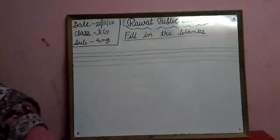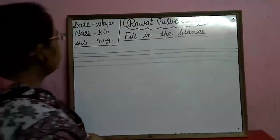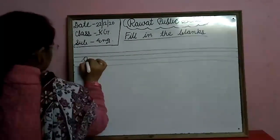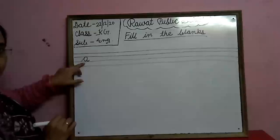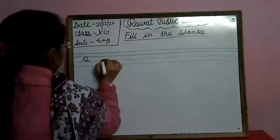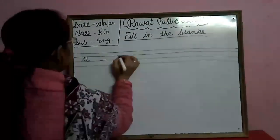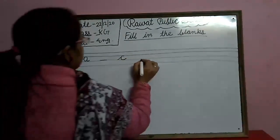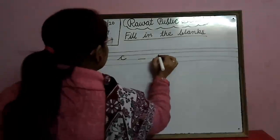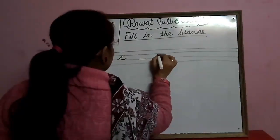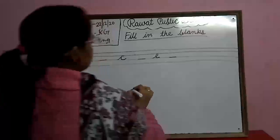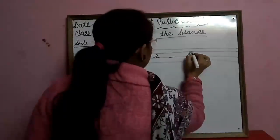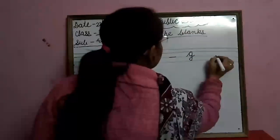We have four lines in our English notebook. This is A, C, blank, E, blank. G, blank.